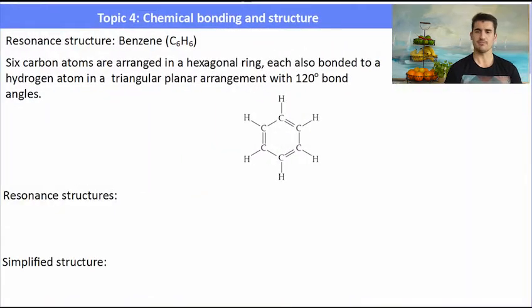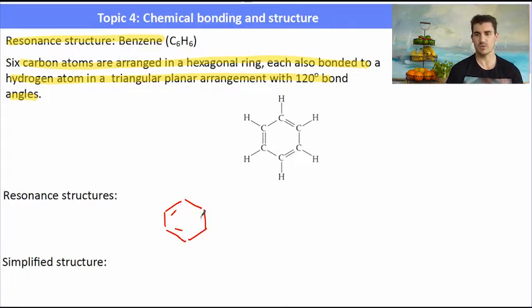Benzene is six carbon atoms arranged in a hexagonal ring with 120 degree bond angles for each of the carbons. At the top of each carbon there's a hydrogen connected. This molecule can resonate as well, so the location of those double bonds can change and it doesn't change the way the molecule functions.